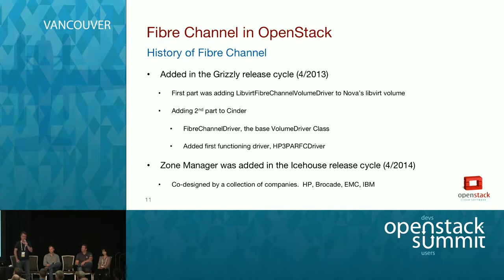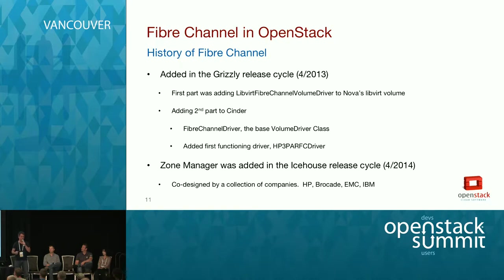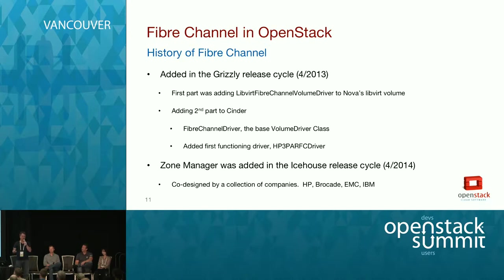We sat down and worked on it. Within a couple of hours, we had our first attachment working, but we couldn't detach volumes yet — and you kind of need to do that. Over the course of the Grizzly release, we were able to get the Nova patch to land on the very last day. At the end of Grizzly, we could attach and detach volumes, but you had to have your fabric pre-zoned, which is completely impractical and not very cloud-like.